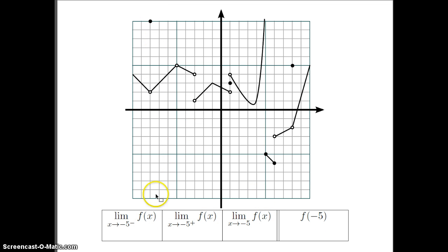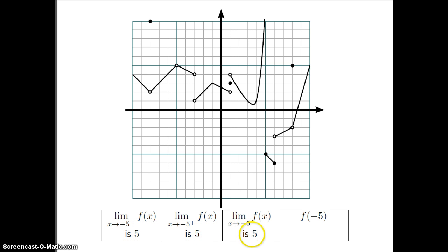The next a value to look at is negative 5. The limit on the left — here's negative 5 — looking a little bit to the left, you get up to this y value, and the y value would be 5. Looking from the right and heading in towards negative 5, the y value again appears to be 5. Since these numbers match, the two-sided limit is 5. What about the actual y value of the function? For the x value of negative 5, there is no y value — it's undefined. This does not exist; negative 5 is not part of the domain.